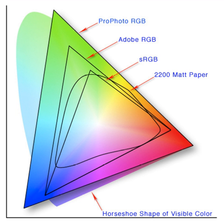HSV — Hue, Saturation, Value — also known as HSB (Hue, Saturation, Brightness) is often used by artists because it is often more natural to think about a color in terms of hue and saturation than in terms of additive or subtractive color components. HSV is a transformation of an RGB color space, and its components and colorimetry are relative to the RGB color space from which it was derived.